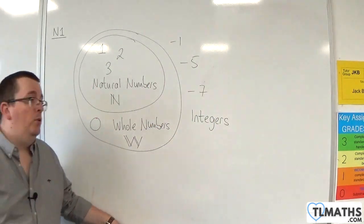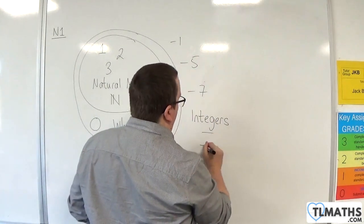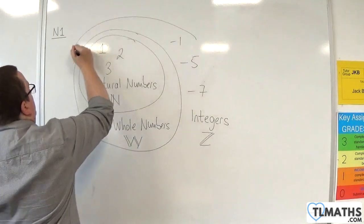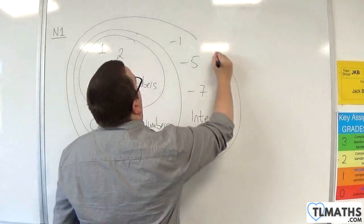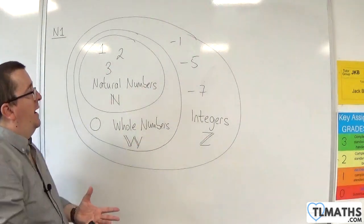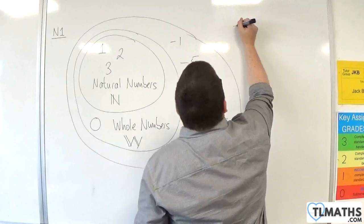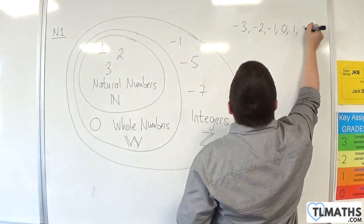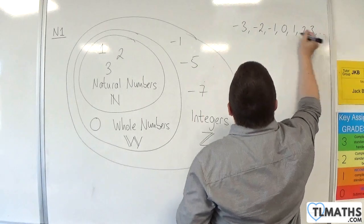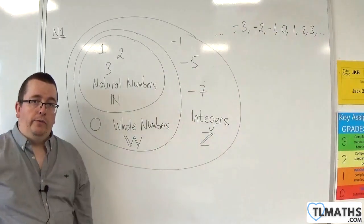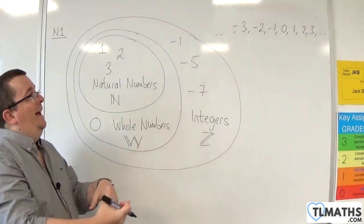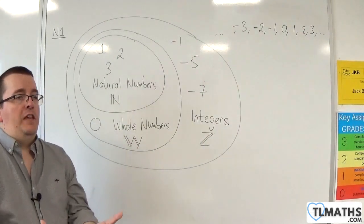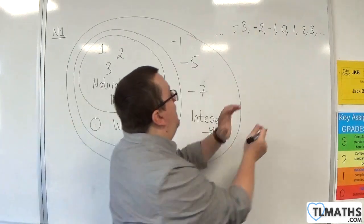The mathematical symbol for integers is a double Z. So, when we talk about integers, we're talking about minus 3, minus 2, minus 1, 0, 1, 2, 3, and so on in both directions. They are the integers, and that is one of the key takeaways from this video — that you understand what we mean by integers.